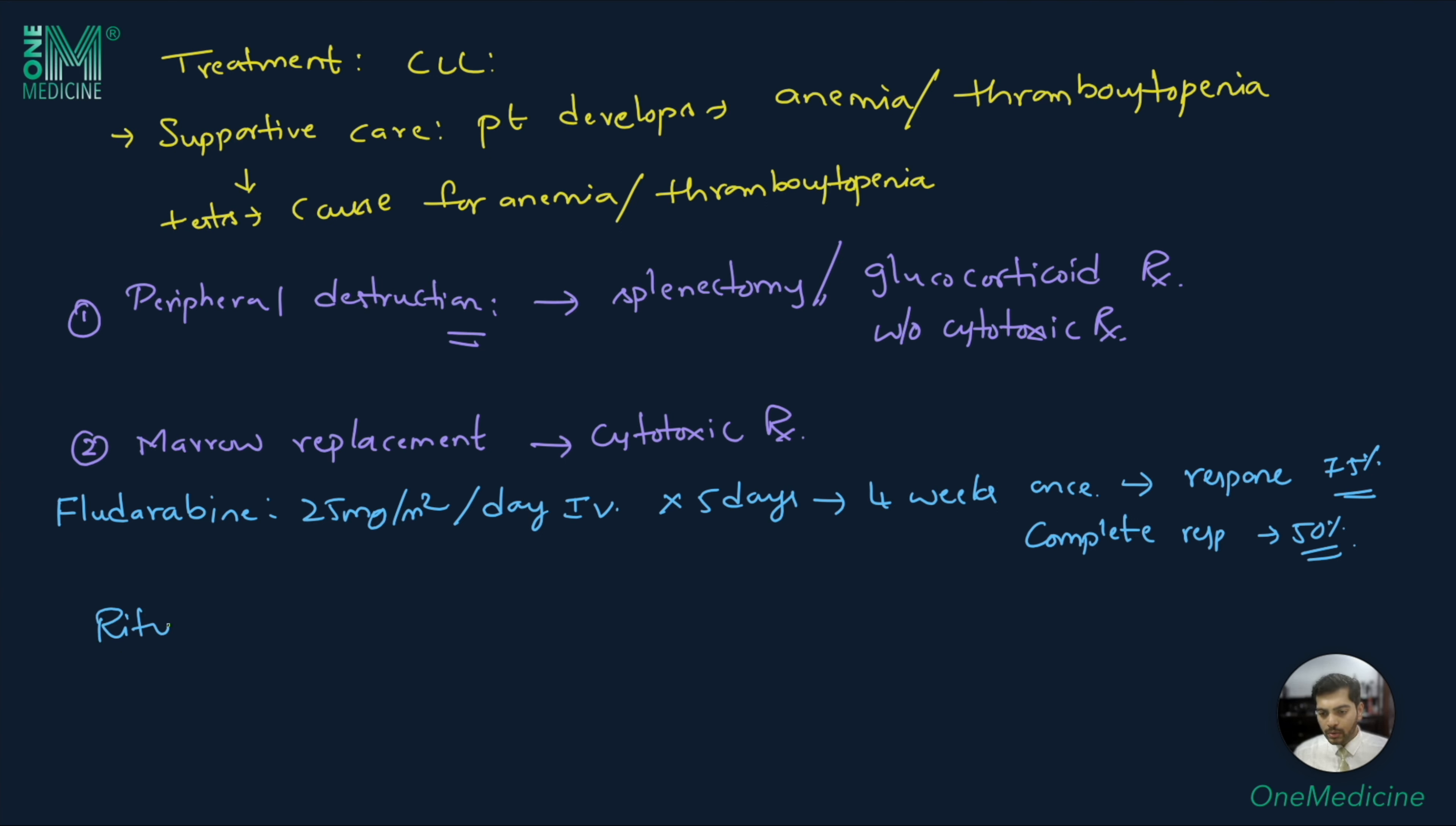The other therapy is giving rituximab 375-500 mg per meter square of body surface area on day 1, fludarabine 25 mg per meter square on days 2-4 on cycle 1 and days 1-3 on subsequent cycles, and cyclophosphamide 250 mg per meter square given along with fludarabine. This regimen is called FCR regimen and induces complete response in up to 70% of patients, but it is associated with severe myelotoxicity.